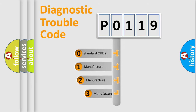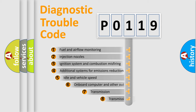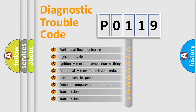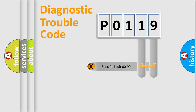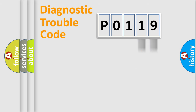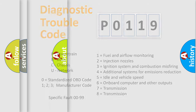If the second character is expressed as zero, it is a standardized error. In the case of numbers 1, 2, or 3, it is a more specific expression of a car-specific error. The third character specifies a subset of errors. This distribution is valid only for the standardized DTC code, and only the last two characters define the specific fault of the group.